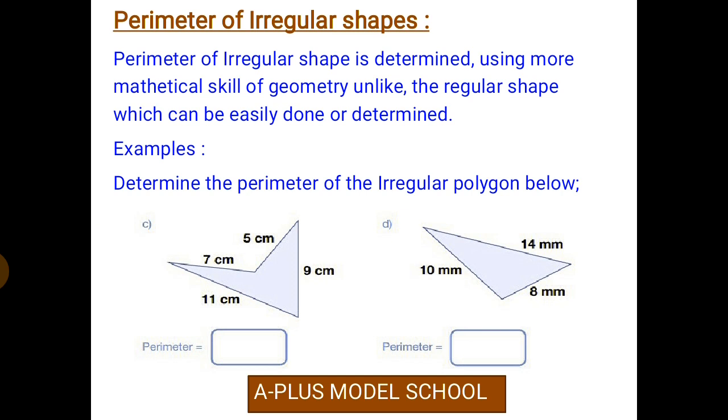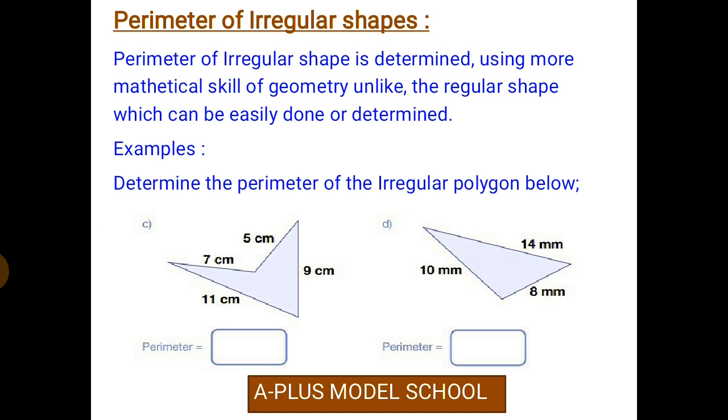So, we have the first one, which is 7 cm, 5 cm, 9 cm, 11 cm. The solution of the first one says: perimeter equals 5 cm plus 7 cm plus 11 cm plus 9 cm. Hence, the perimeter of the first one is equal to 32 cm.